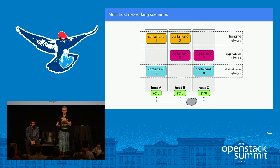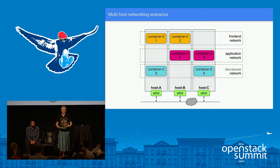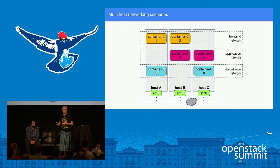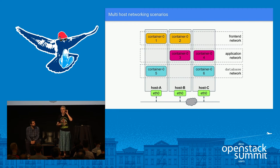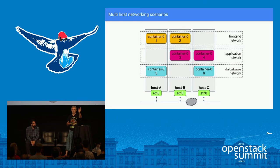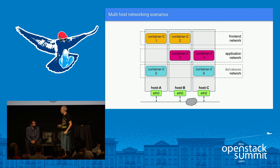As long as two groups of containers — say the pink and the yellow — never need to talk to each other, they can use the same IP addresses. There needs to be something in the encapsulation that has a scope to differentiate them: for example, 10.65.0.2 for the yellow containers and 10.65.0.2 for the pink containers.